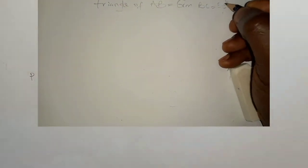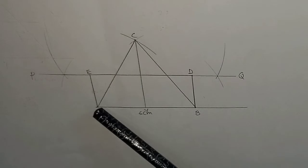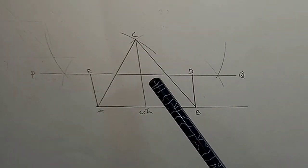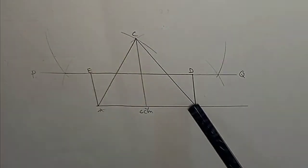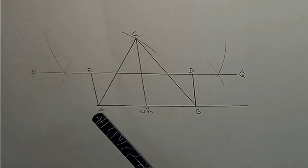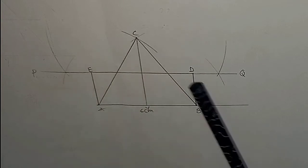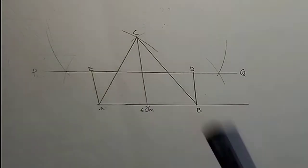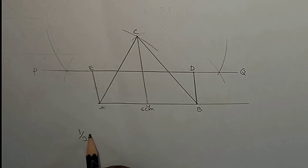The solution to this question is as follows. This is the triangle made of 6 centimeters for the base and the sides are 5.5 centimeters each. I will draw this triangle and then use it to get a rectangle having the same amount of space occupied by the triangle. The formula for finding the area of a triangle is half times base times height.